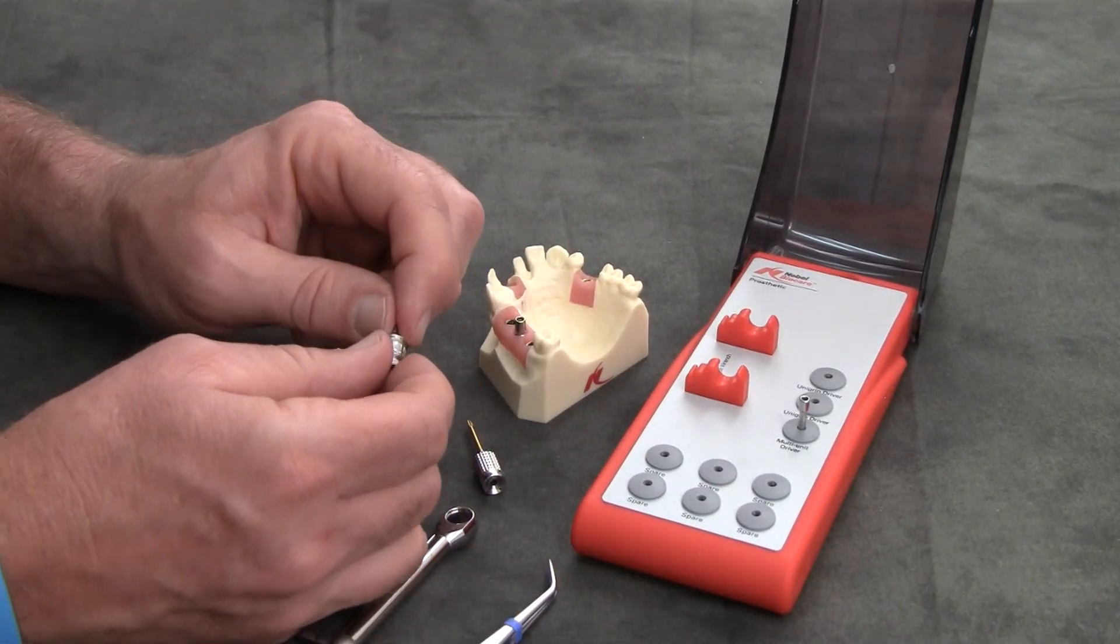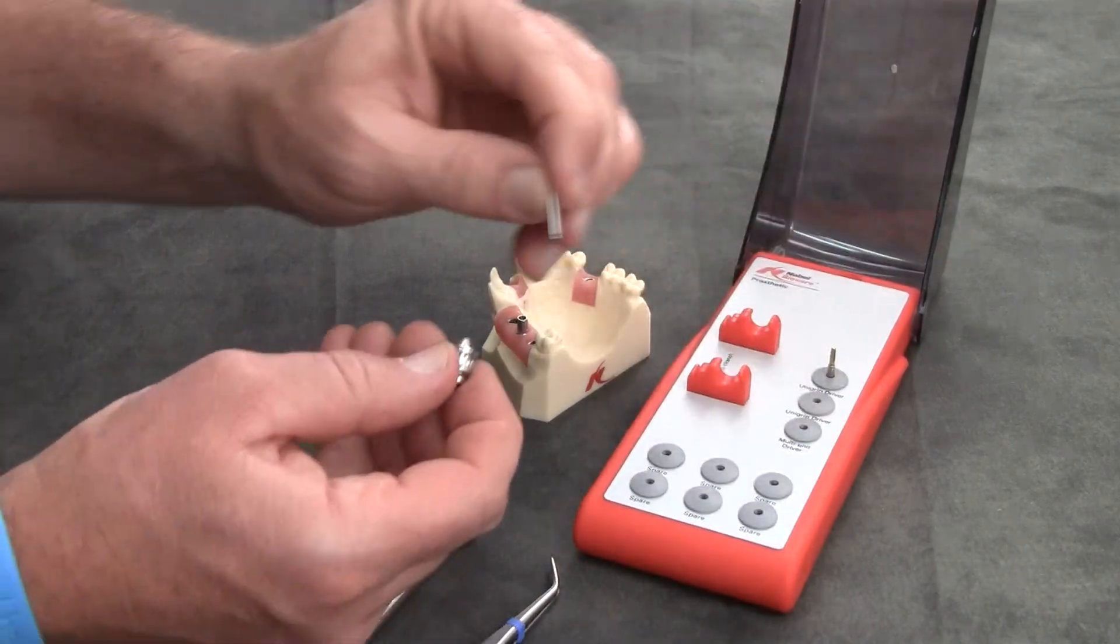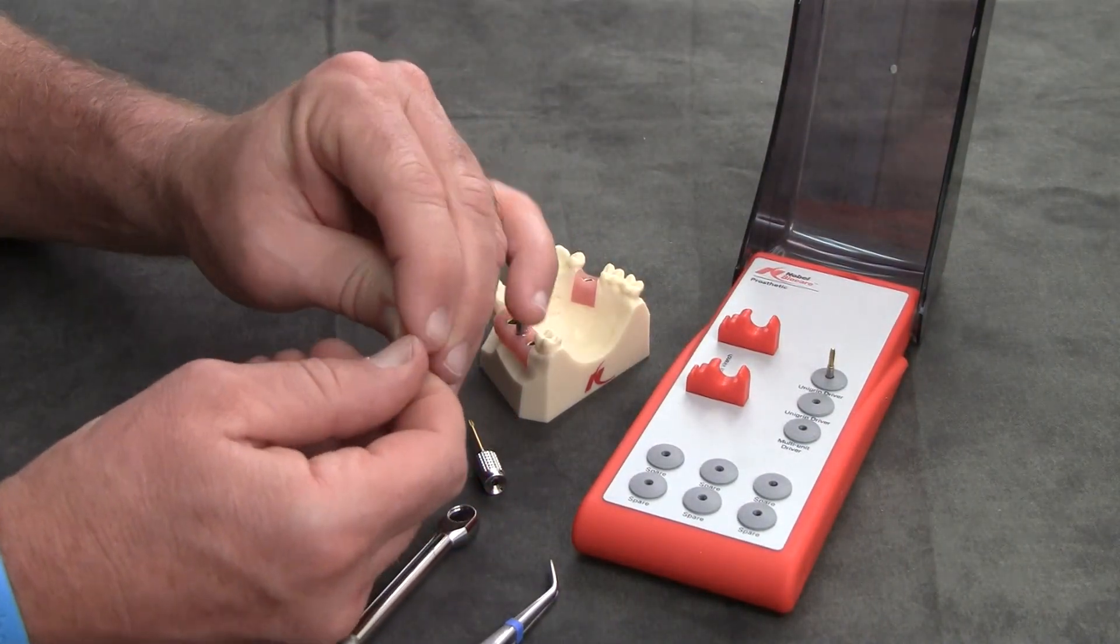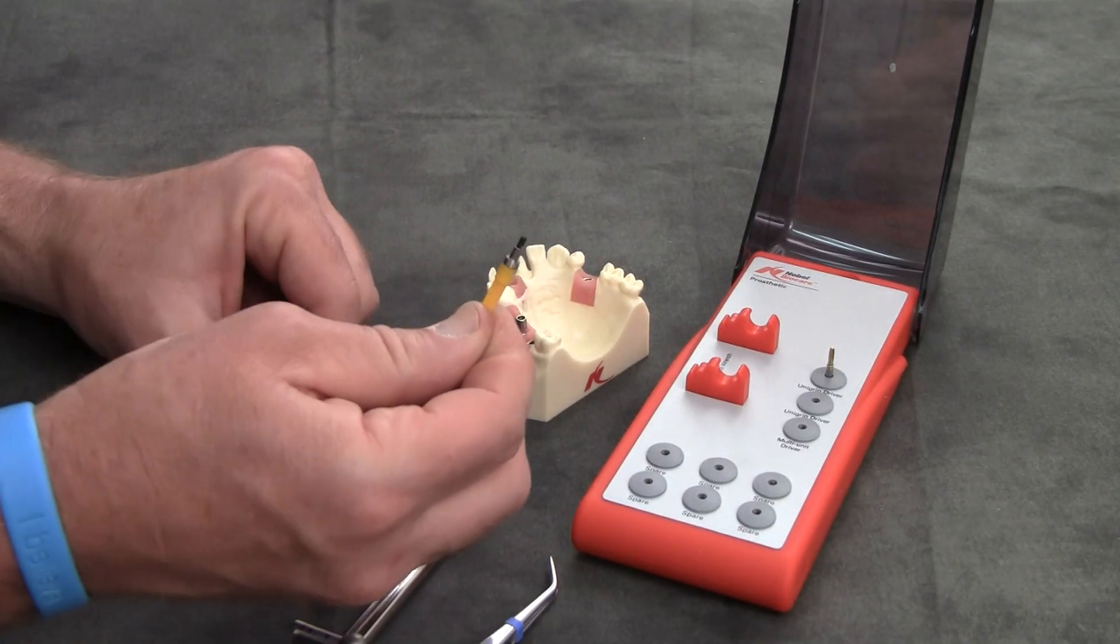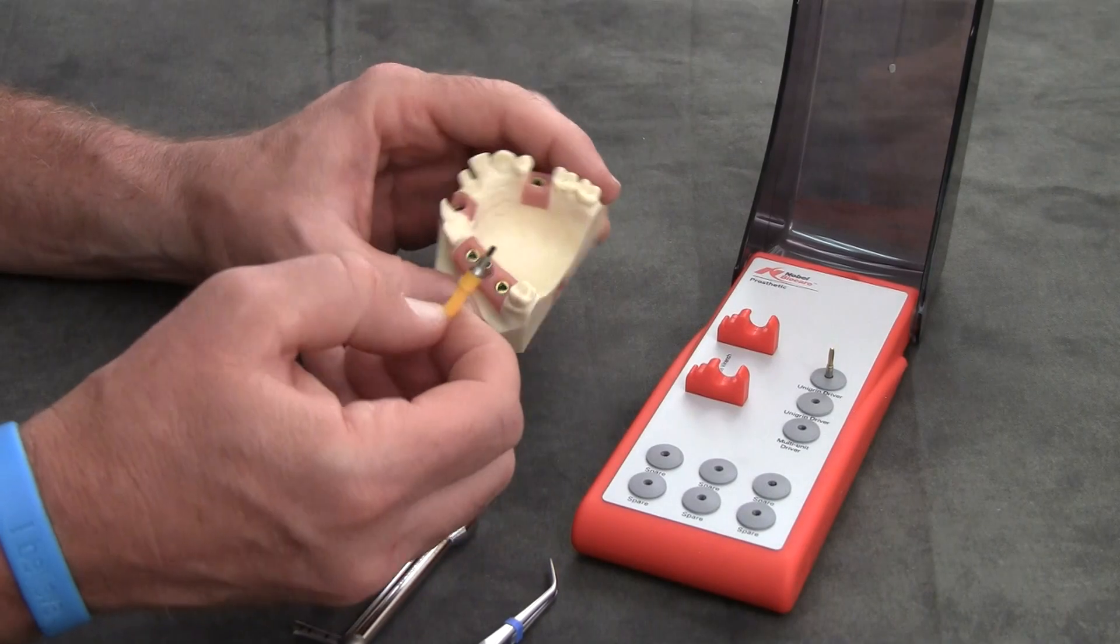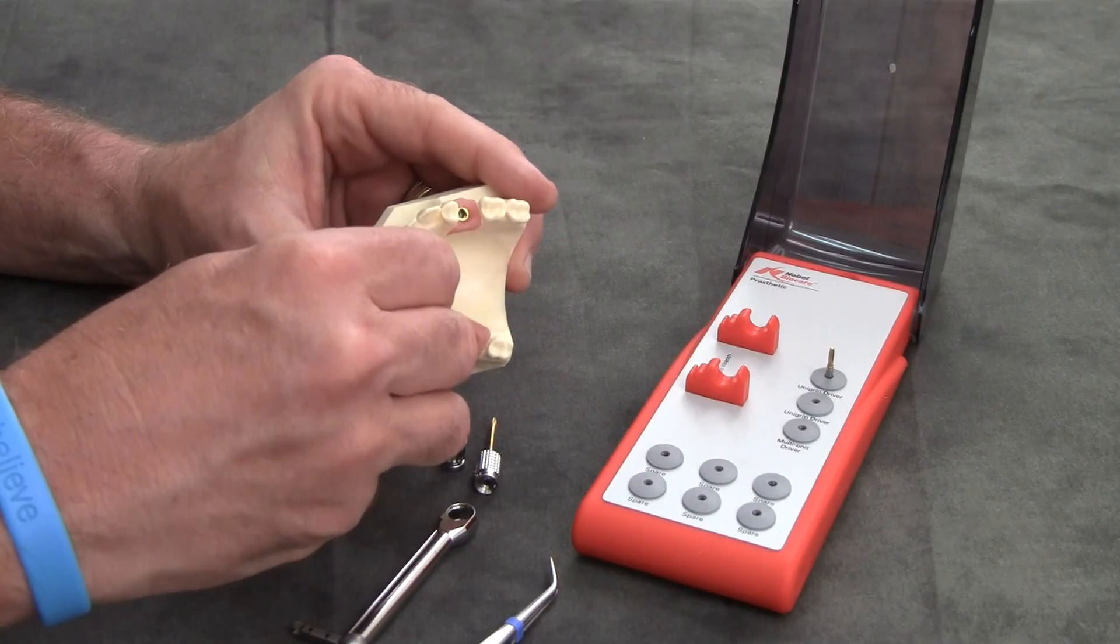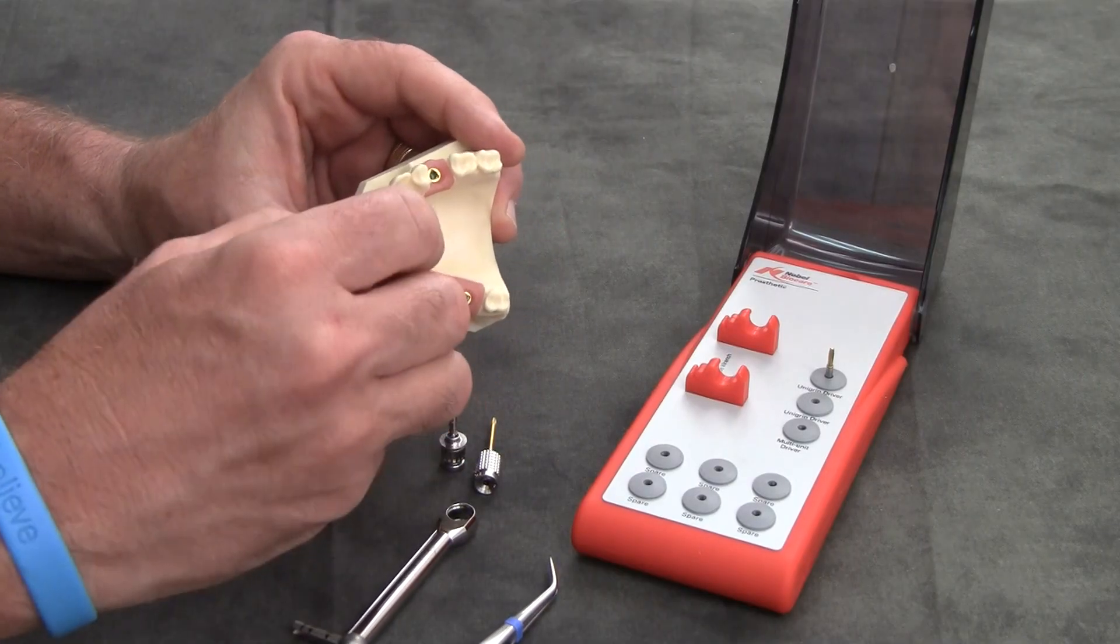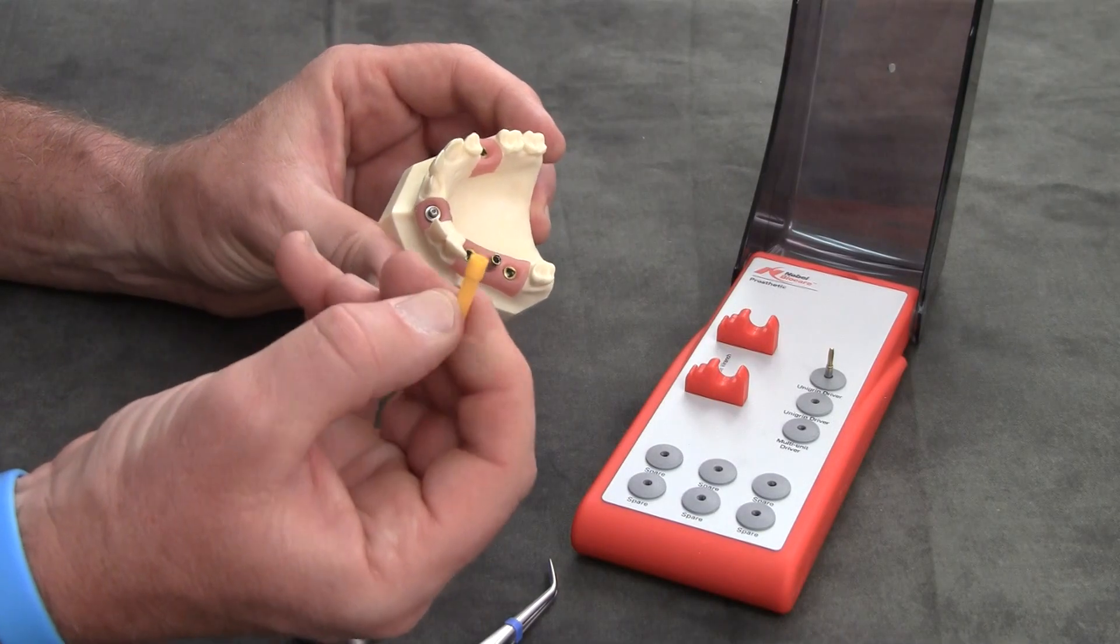The multi-unit insert can be utilized in this way. You can start by hand with a hand adapter. Our straight multi-unit abutments come with this plastic carrier. Simply take it to the site and screw in as much as you can by hand. This will come off.